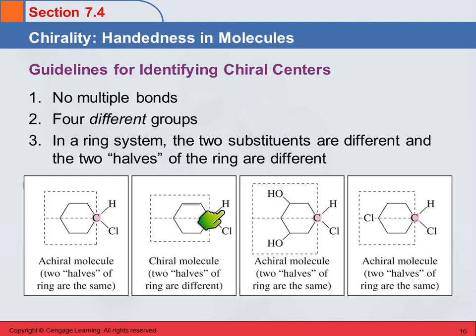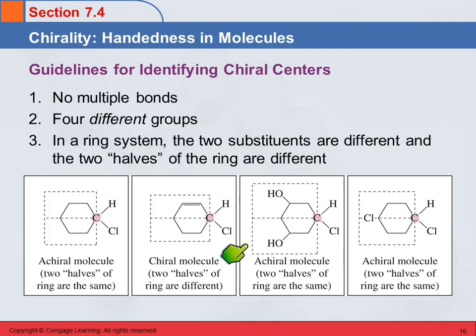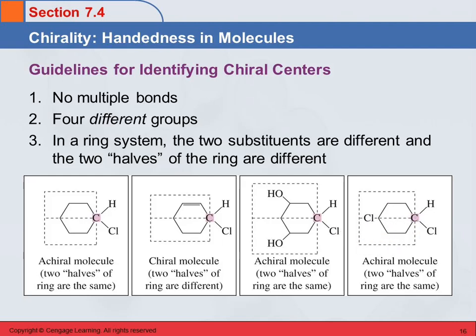If this had two hydrogens, it wouldn't be chiral — it has to have four different things. Here's another example of an achiral molecule: we've got two substituents on the carbon, but the halves of the ring are the same, so this is achiral. This one is also achiral — the chlorine is equidistant from both directions, so those are considered the same. Now we could make that chiral: if we stuck a chlorine here, then that would become chiral, because now the halves are different.